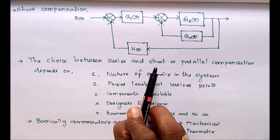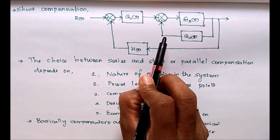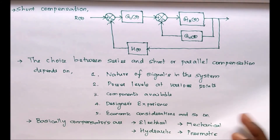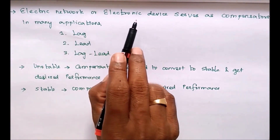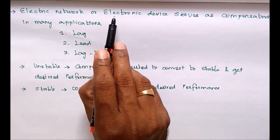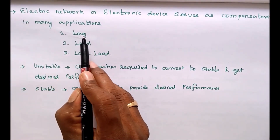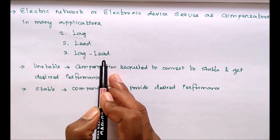Compensators have four basic classifications: electrical compensator, mechanical compensator, hydraulic compensator, and pneumatic compensator. Among these, electronic networks or electronic devices serve as compensators in many applications. There are three types: lag compensator, lead compensator, and lag-lead compensator.